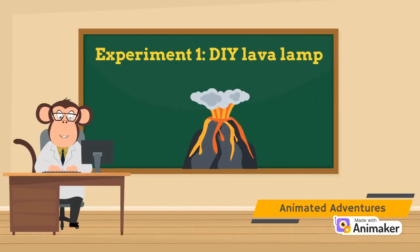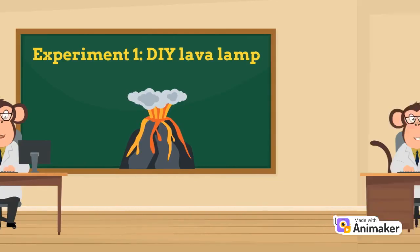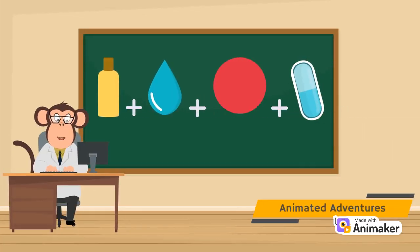Experiment 1. DIY Lava Lamp. Create your very own lava lamp using vegetable oil, water, food coloring, and Alka-Seltzer tablets. Watch as the colors swirl and mix in mesmerizing patterns.